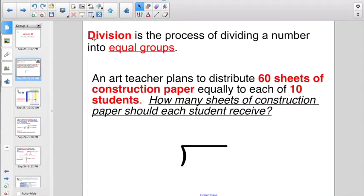So a little bit of review: division is just the process of dividing a number into equal groups. So if you had a question like, an art teacher plans to distribute 60 sheets of construction paper equally to each of 10 students, how many sheets of construction paper should each student receive?